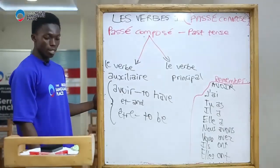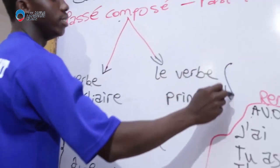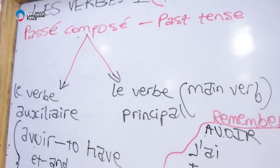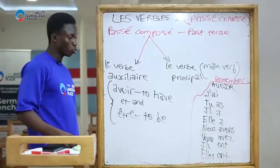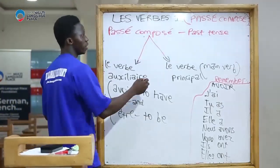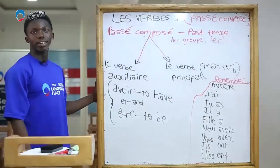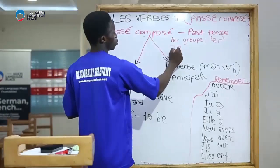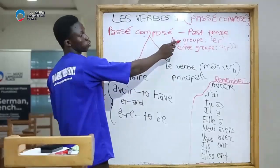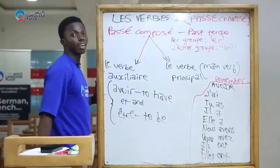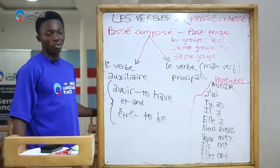Now, verbe principal means the main verb. N'oubliez pas — verbs in French are divided into three groups. The first group verbs end with -er and they are regular. The second group verbs end with -ir and they are also regular. While the third group verbs can have any ending: -er, -ir, -oir, -dre, -cre, and so on.